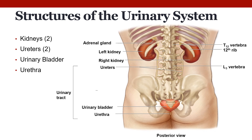The organs of the urinary system include the kidneys, the ureters, the bladder, and the urethra. There are two kidneys, which are those purplish-brown bean-shaped organs located below the ribs toward the middle of the back. Their function is to remove waste and drugs from the body, balance body fluids, release hormones to regulate blood pressure, and control production of red blood cells.